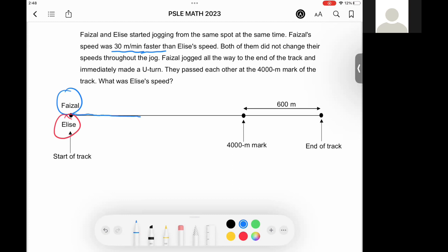This is the distance that Faiza completed. When he reached the end of the track, he made a U-turn immediately and headed back towards where he started.